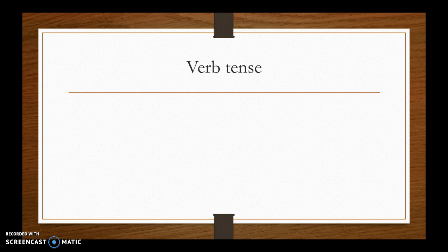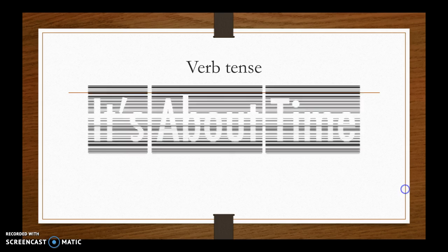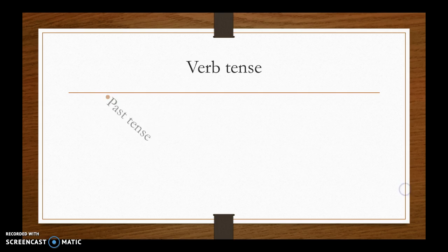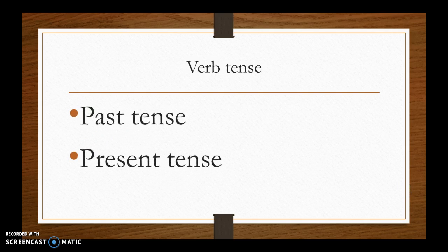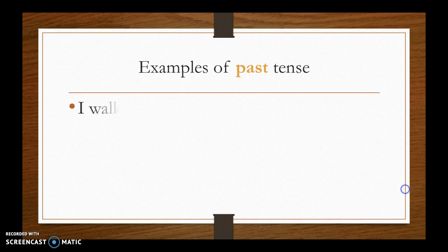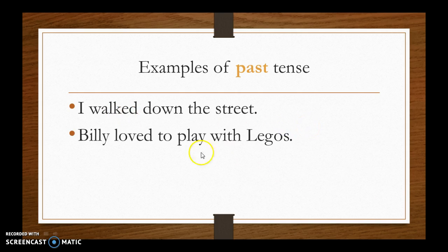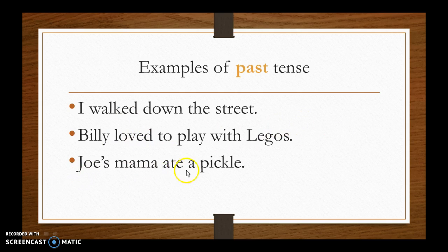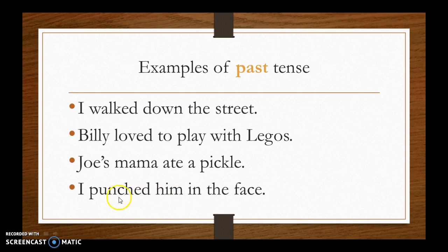When writing this paper, you're going to be using verb tenses. Verb tense is about time — there are two kinds we'll be dealing with: past tense and present tense. Past tense deals with things that already happened. For example: 'I walked down the street' — walked happened in the past. 'Billy loved to play with Legos' — that happened in the past. 'Joe's mama ate a pickle' — she ate it; past tense. 'I punched him in the face' — that happened in the past. All of those verbs are in past tense.